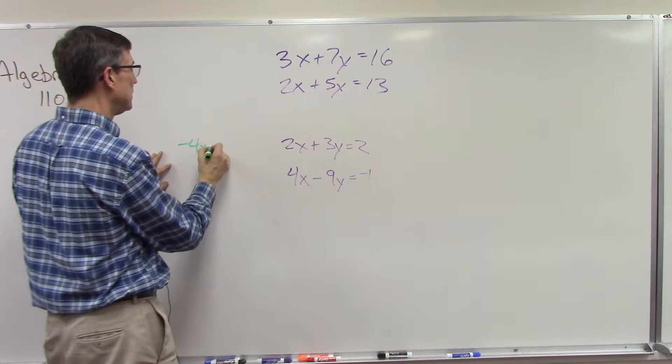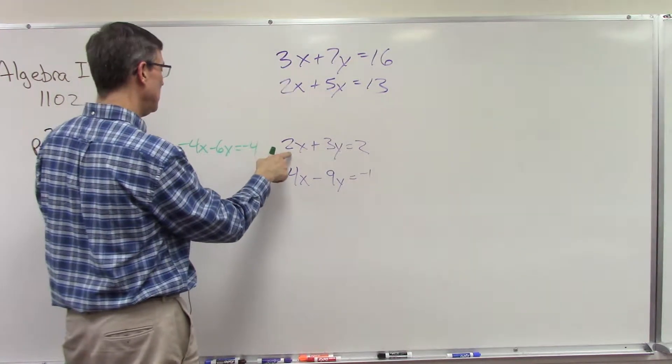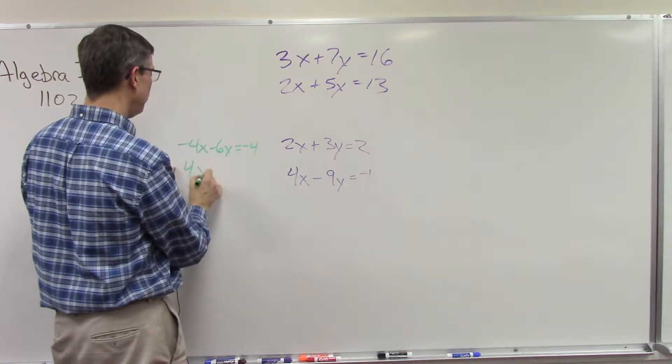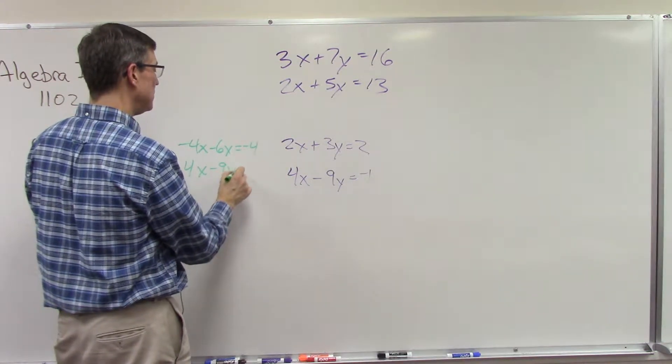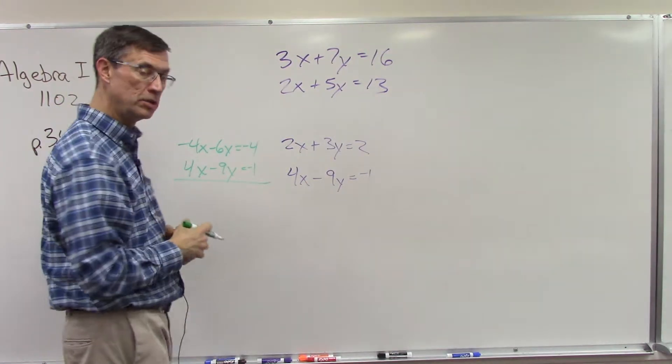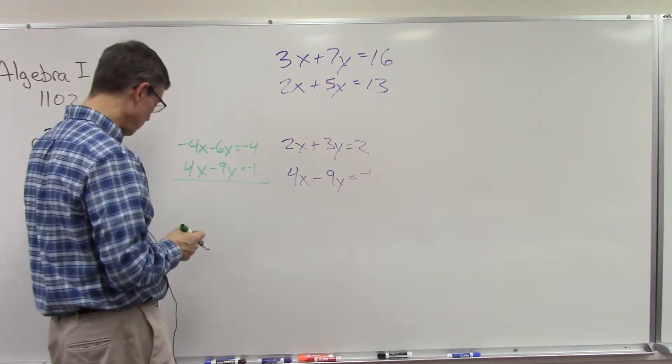And if I did that I would have negative 4x minus 6y equals negative 4. See how I did that? Negative 2 times negative 2. Then put the 4x minus 9y equals negative 1 underneath, and then I could add these two equations and the x's would cancel out.